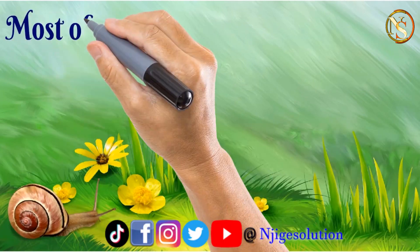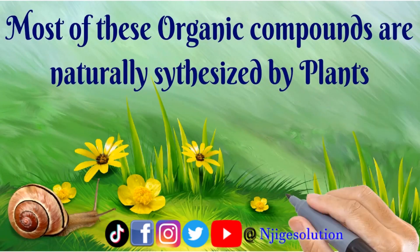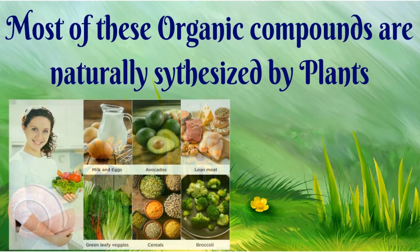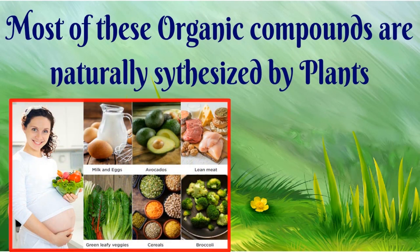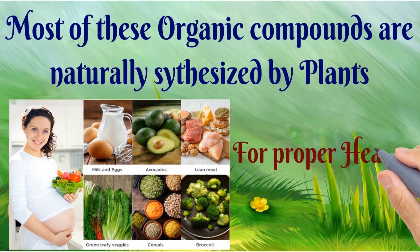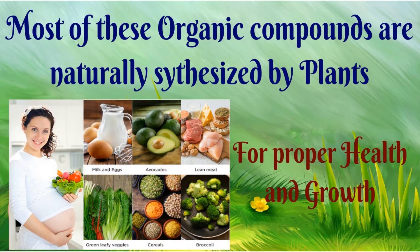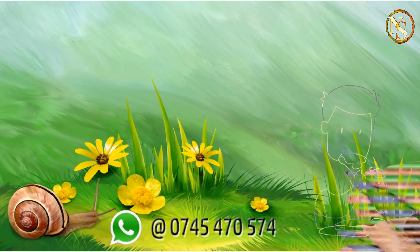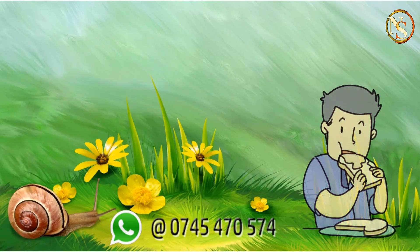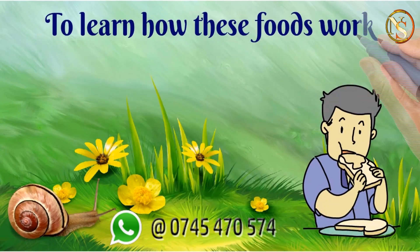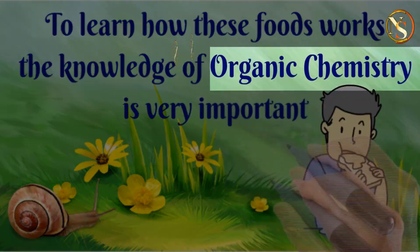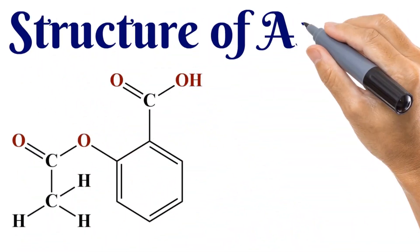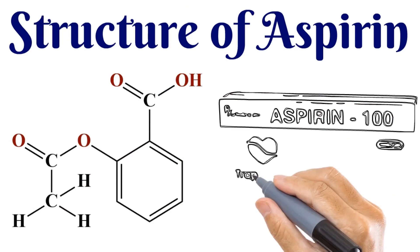They are naturally synthesized by living organisms such as plants. All of these foods have very vital functions to our body. For proper health and growth, a human being needs to eat all organic foods. In order to understand how all these foods work in our body, the knowledge of organic chemistry is very important. The structure and the properties of these organic compounds are discussed here on GK Solution.